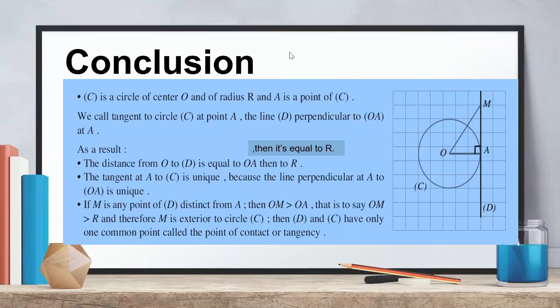Now, what conclusion can be drawn? C is a circle of center O and radius r, and A is a point on C. We call the tangent to a circle at point A the line d that is perpendicular to OA at A. By definition, if I want to draw a tangent to a circle at any point A, I draw the radius OA, then draw a line d perpendicular to OA at A — that gives the tangent at A. Result: the distance from O to line d equals the radius.